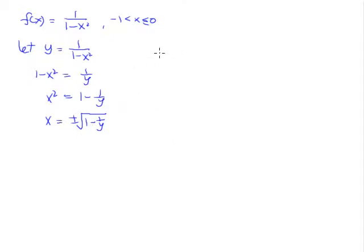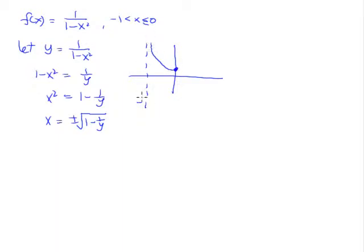If you go to your GC and sketch this graph out, it looks rather complex, but bear in mind the domain we are interested in is only from negative 1 to 0. If you filter out the rest of the curve, you get a curve where negative 1 is the vertical asymptote, and when x equals 0, you get 1. This is our f(x) for this domain. Since the domain is the left-hand side of the curve, the inverse will use the negative root — on the right-hand side it would be the positive root.